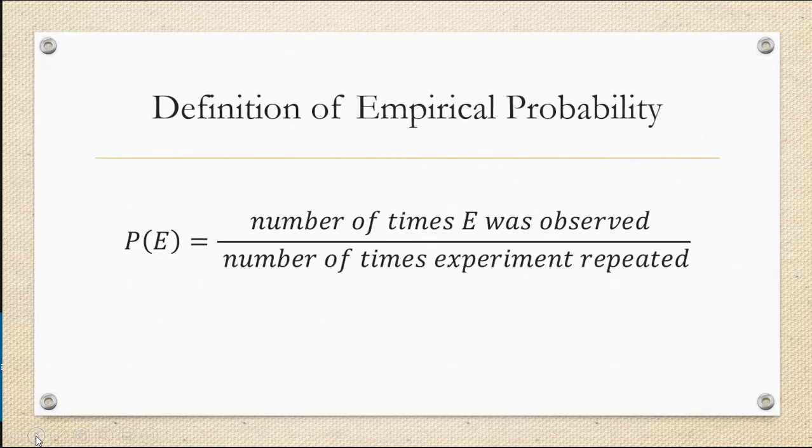Let's recall the definition of empirical or experimental probability. If we want to find the probability of a particular event E, then we're going to count the number of times that E was observed divided by the total number of times the experiment was repeated. We're going to use this basic definition of empirical probability to answer the following questions.